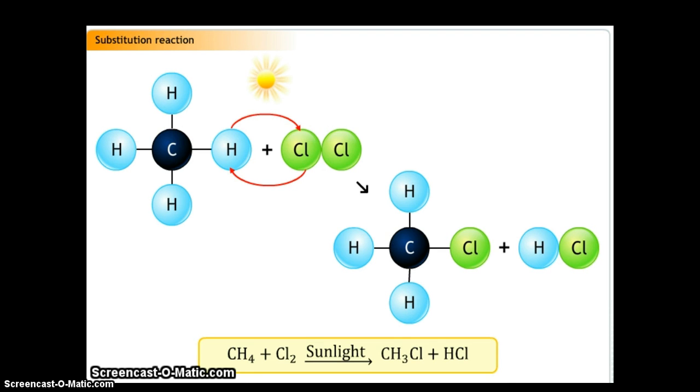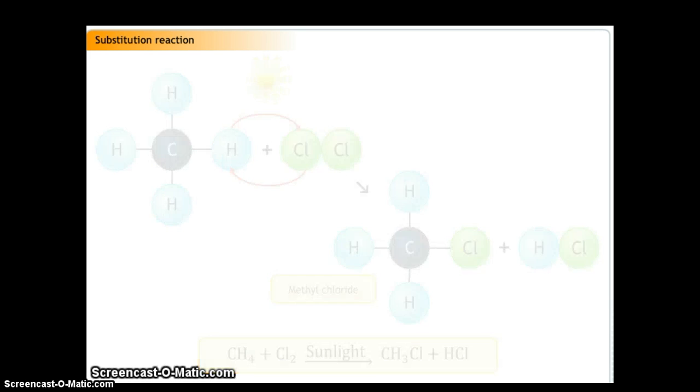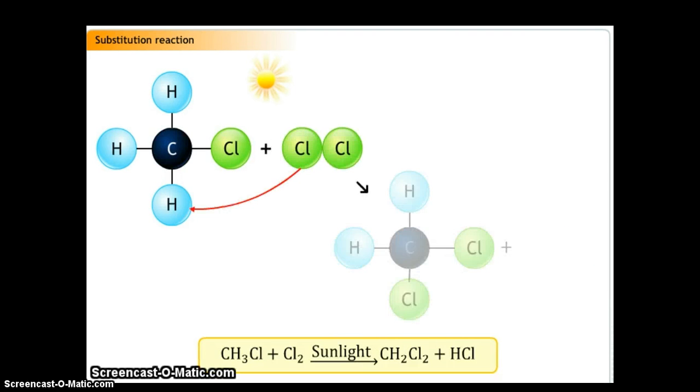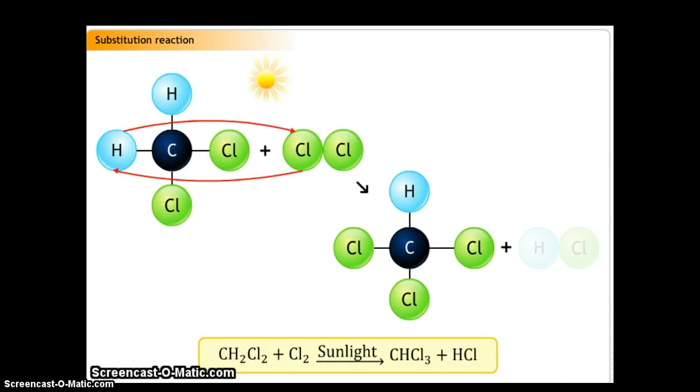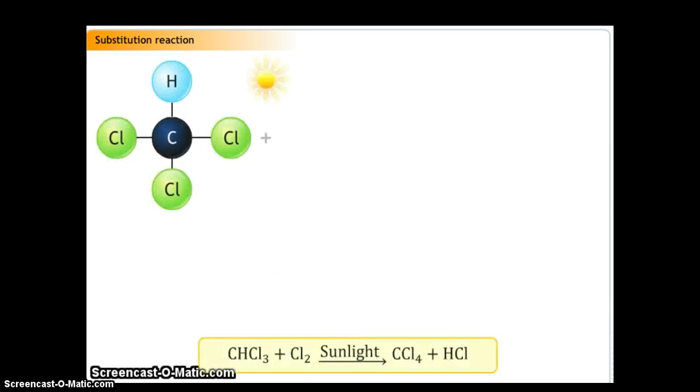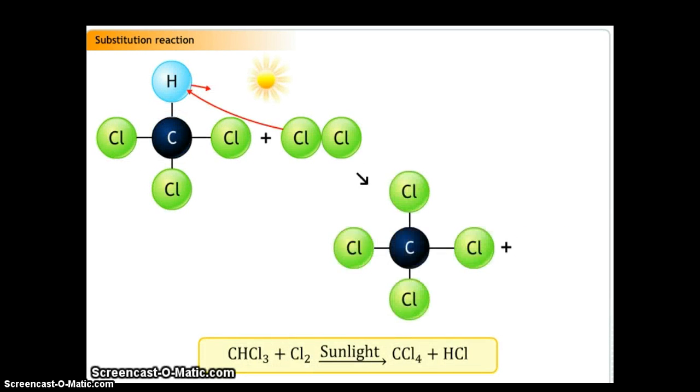Initially, chlorine replaces or substitutes one of the hydrogen atoms and forms methyl chloride or chloromethane. Chloromethane reacts with chlorine to form dichloromethane. Dichloromethane reacts with chlorine to form chloroform. Chloroform on further chlorination forms carbon tetrachloride.